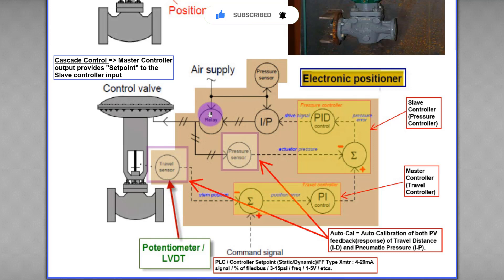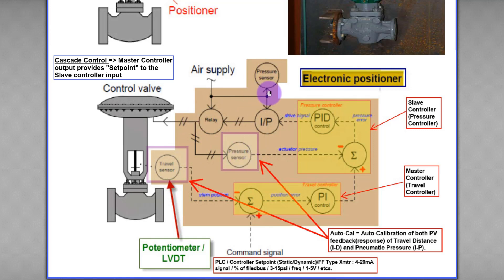Note that there are two pressure sensors located inside the positioner itself. One pressure sensor measures the total incoming pneumatic air pressure, while the other pressure sensor measures the output pneumatic air pressure supplied to the actuator or control valve.